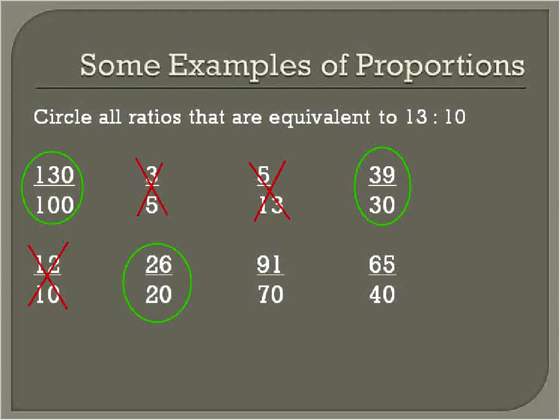91 over 70. Let's look at this again. What times 10 will give us 70? Well, 7 times 10 will give us 70, and what's 7 times 13? It is 91. So again, we have another equivalent fraction or equivalent ratio. The next one we have is 65 over 40. 10 times something will give us 40. 10 times 4 is 40. What's 13 times 4? Well, 13 times 4 is equal to 52, not 65. So therefore, that one is not equivalent.